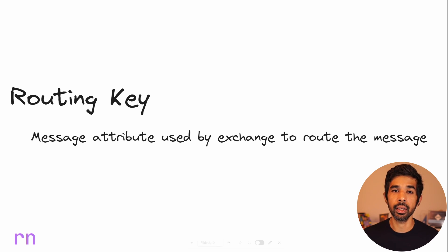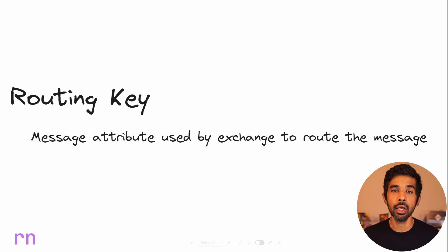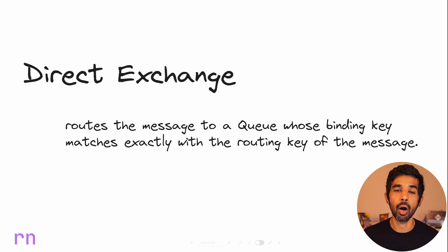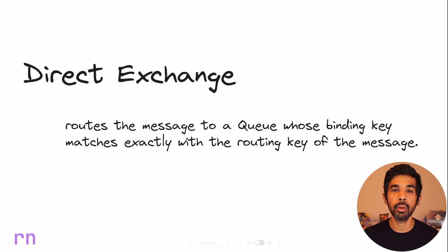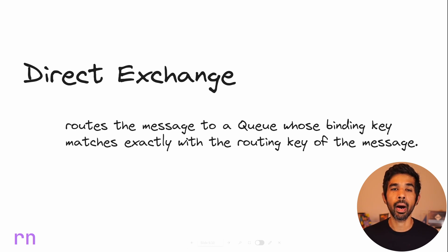A part of the routing key is also used when we specify a binding, which is what the exchange uses to determine how to use this routing key on a message attribute. Now that you understand exchanges, routing keys, and bindings, let's dive into the topic of the direct exchange. A direct exchange routes messages to a queue whose binding key exactly matches the routing key of the message.